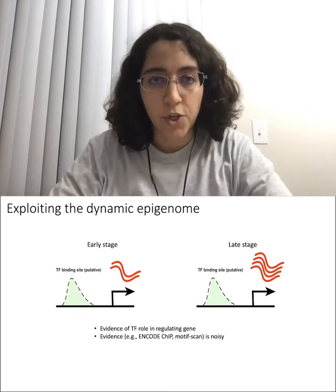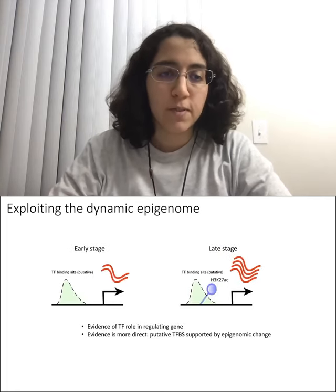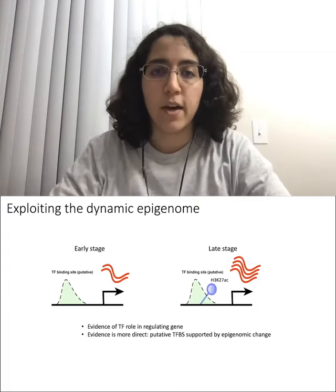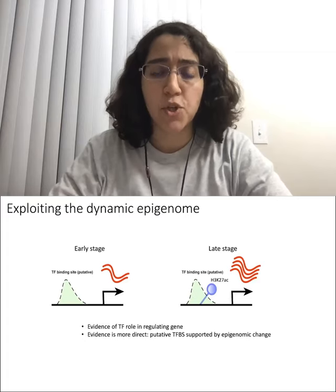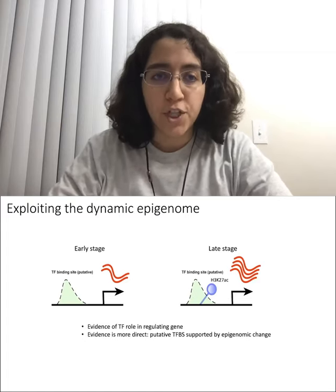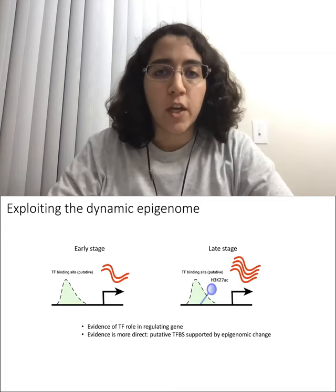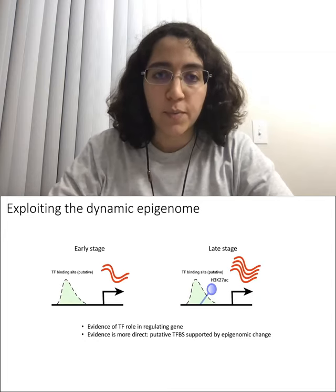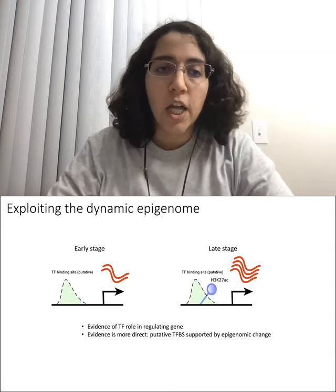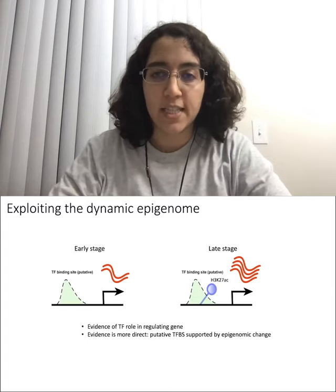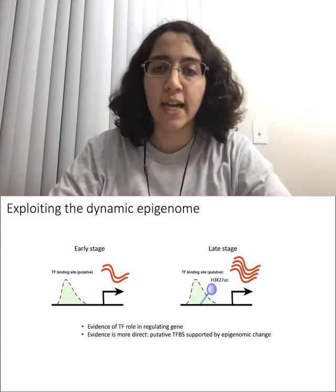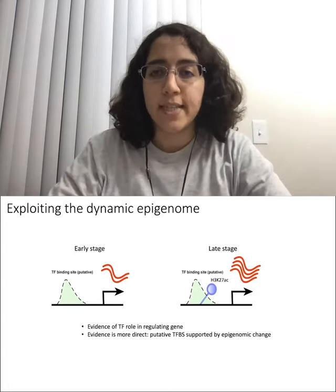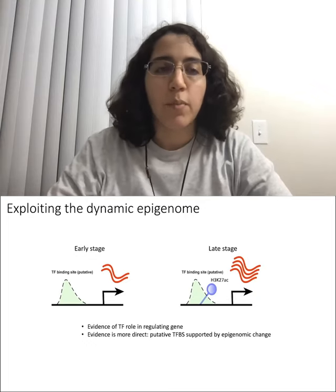To mitigate this issue, we increase the functional specificity of TF binding sites by considering those that have a change in epigenomic state. For example, if the expression of a gene increases from early to later stage of progression, and we observe that in the TF binding site close to the gene there is a gain in H3K27 acetylation histone mark — which is an activator mark — then we are more confident that the TF binding site is functional and the TF is regulating the gene during progression.